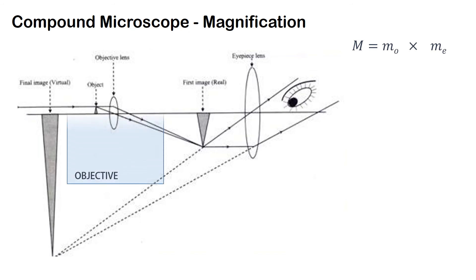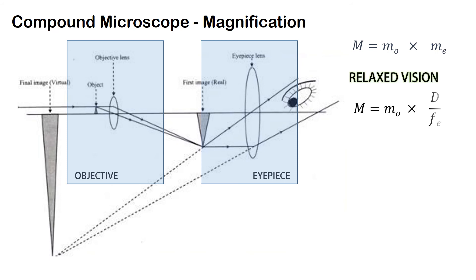The magnification of a microscope can be written as magnification of objective into the magnification of eyepiece. For relaxed vision we can write it as magnification of the objective into d by fe as we have seen previously, and similarly we can express it for distinct vision.